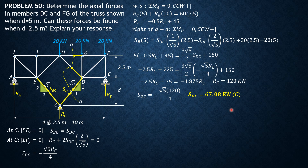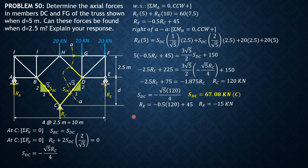For the force in FG, we cut section BB through that portion. First, let's solve R_E: R_E equals negative 0.5 times R_C plus 45 equals negative 0.5 times 120 plus 45 equals negative 15 kN. The negative sign means R_E is actually downward, but we keep the sign as negative 15 kN.